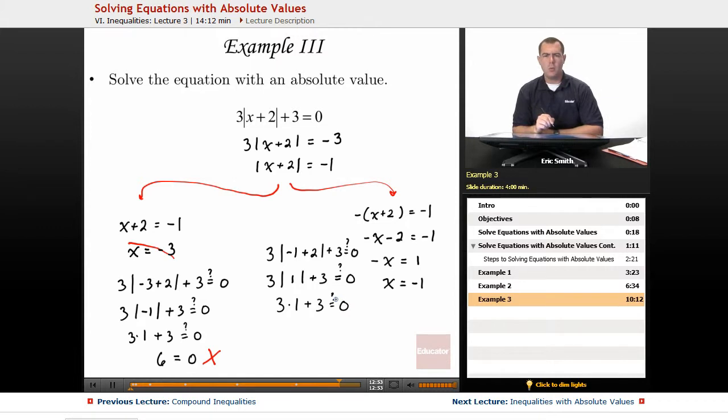So I have 3 times 1 plus 3. I think that's the same situation as before, or 6 is equal to 0. So that doesn't work out as well. I have to throw away that solution.